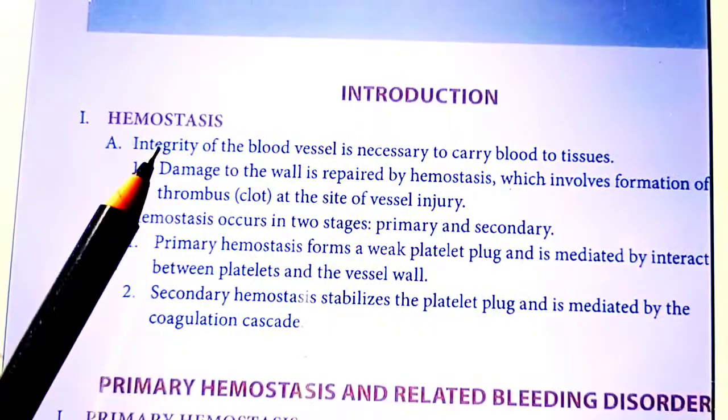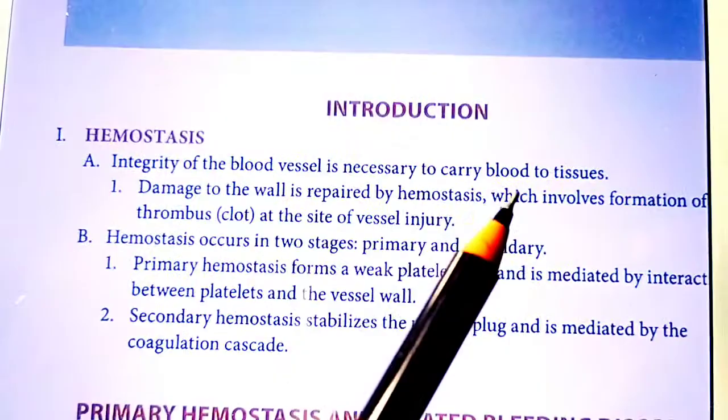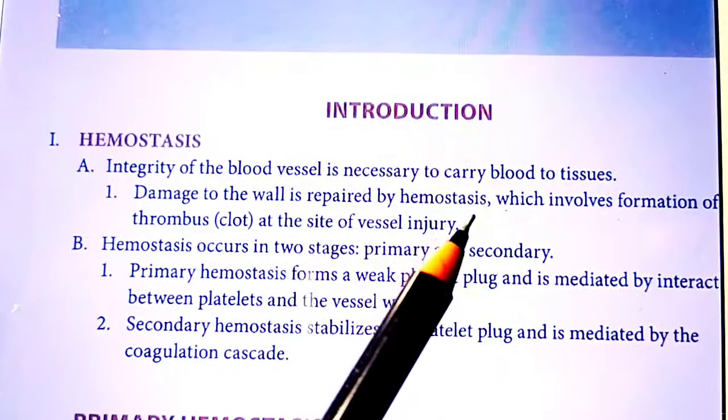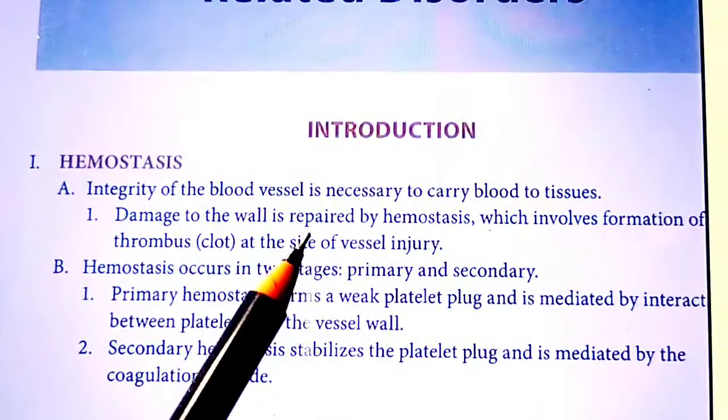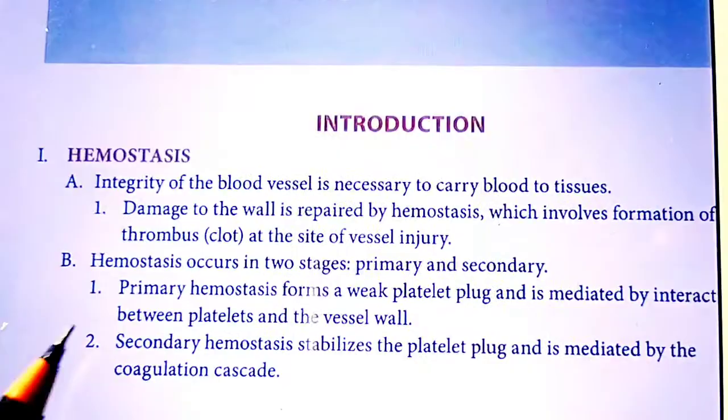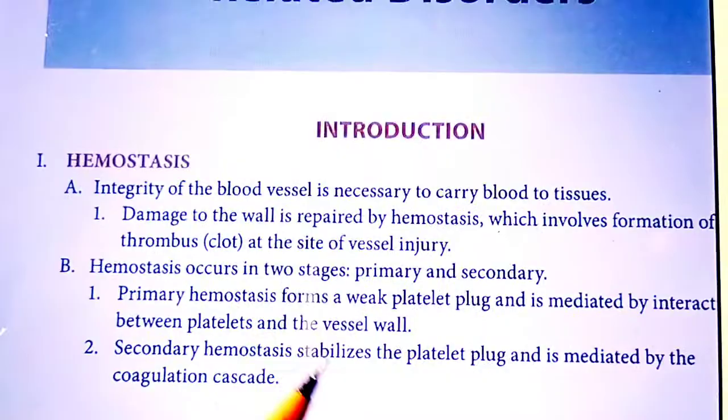The integrity of blood vessels is necessary to carry blood to tissue. If this integrity is lost, we get different disorders. Damage to the wall is repaired by hemostasis, which involves formation of a thrombus clot at the site of vessel injury.